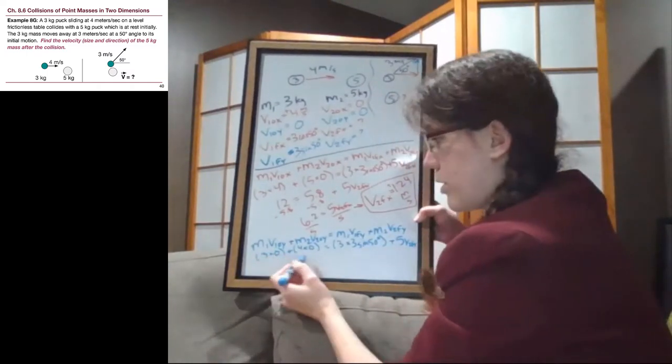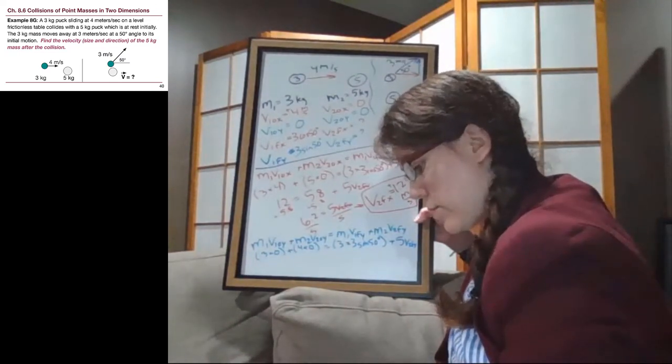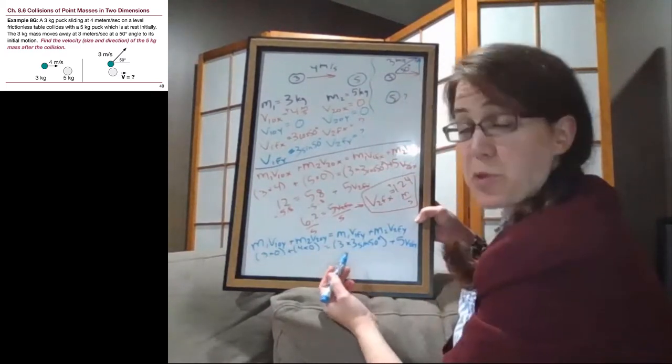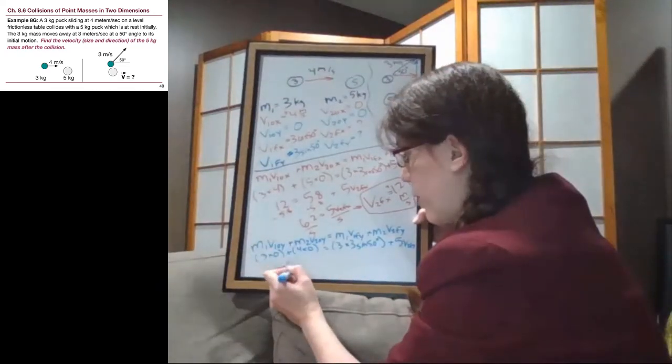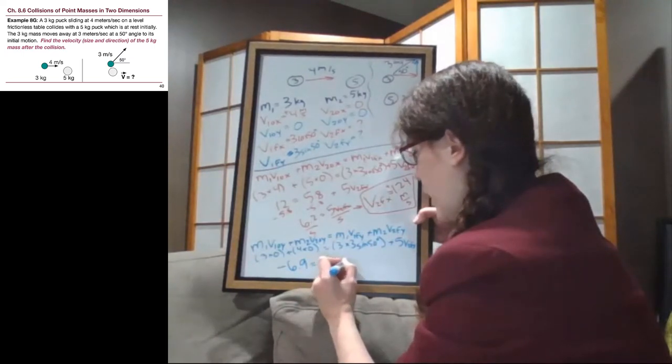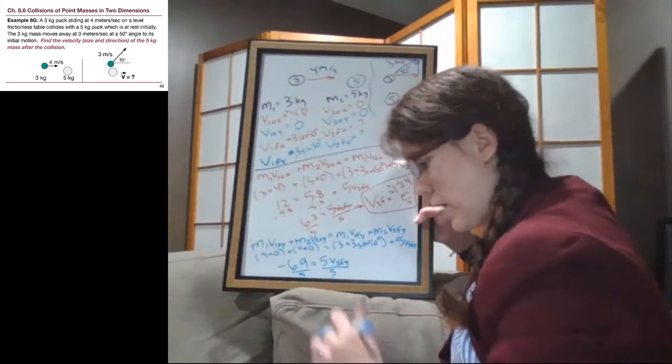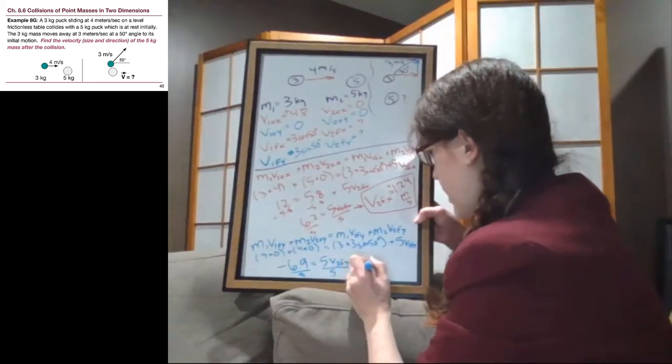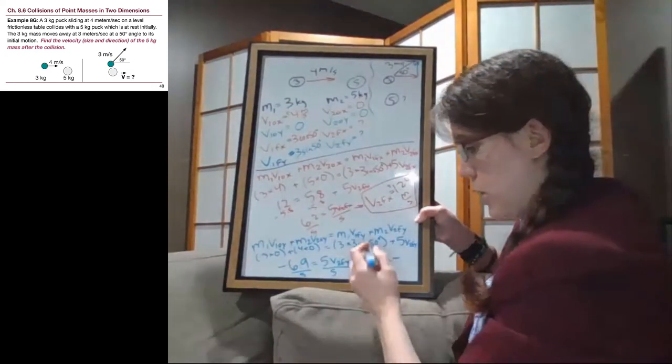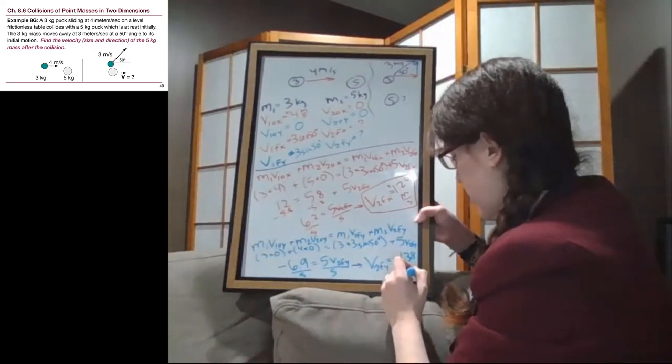So this is zero on the left, and this here, the 3 times 3 times the sine of 50 degrees, that's 6.9. I'm going to subtract that from both sides. So now we have minus 6.9 equals 5v2fy. That way right away we can divide by 5, and we will get that v2fy is negative, that means downwards on our page, 1.38 meters per second.